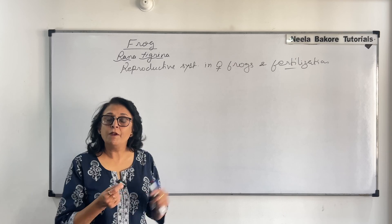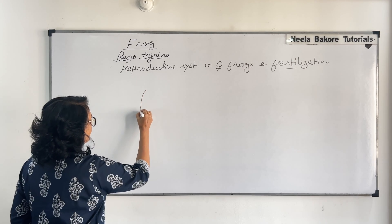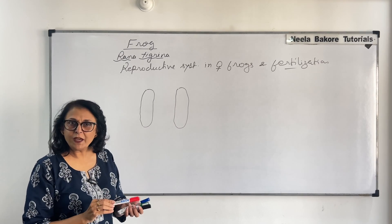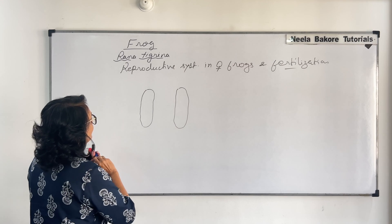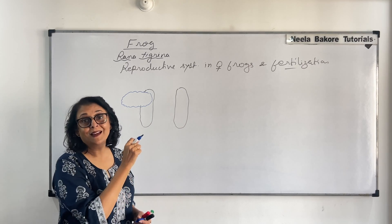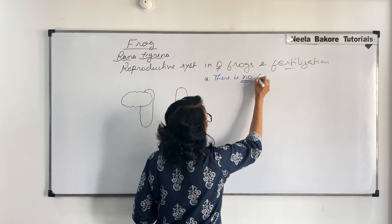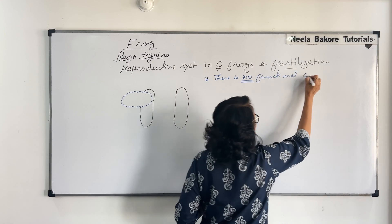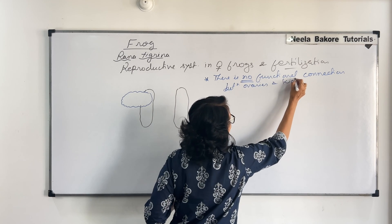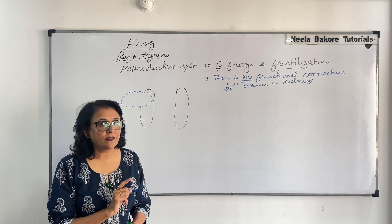The oviducts open separately as well. The ovaries are placed over the kidneys at a similar location. The kidneys are elongated bean-shaped structures, and the ovaries are ovoid, slightly irregular structures placed close to the kidneys. However, there is no functional connection between the ovaries and the kidneys, unlike in male frogs where the testes and kidneys shared a common functional connection.